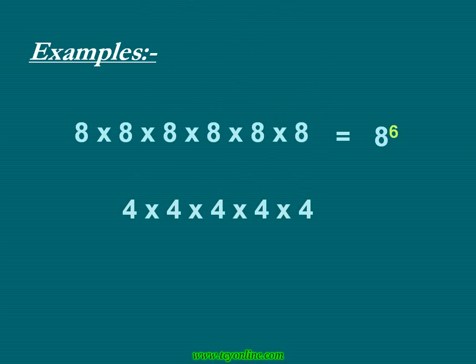Here 4 is being multiplied by itself 5 times. So it can be written in exponential form as 4 raised to the power 5, where 4 is the base and 5 is the exponent.